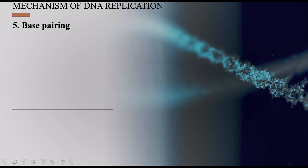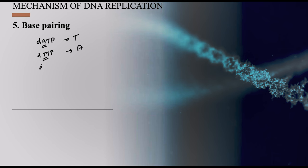Step five is base pairing. The two separated strands in the area of the replication fork function as templates. Complementary phosphorylated nucleotides pair up: DATP pairs with T, T pairs with A, C pairs with G, and G pairs with C. These molecules need energy to build hydrogen bonds for base pairing.